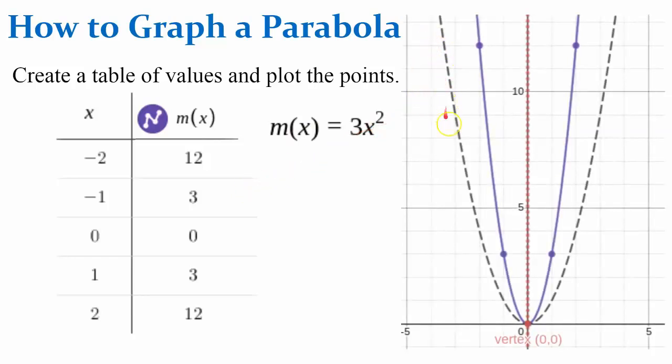So this black dashed line represents the parent function, y equals x squared. And then we have our purple function, m. All values are plotted here.